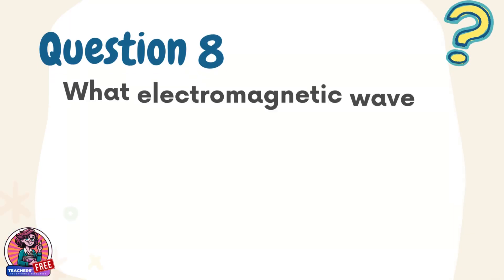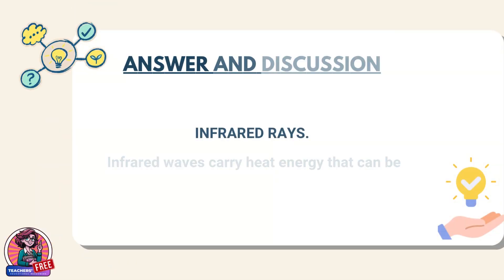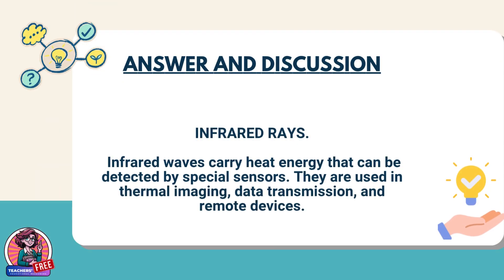Question 8. What electromagnetic wave is used in night vision goggles and remote controls? Answer: infrared rays. Infrared waves carry heat energy that can be detected by special sensors. They are used in thermal imaging, data transmission, and remote devices.